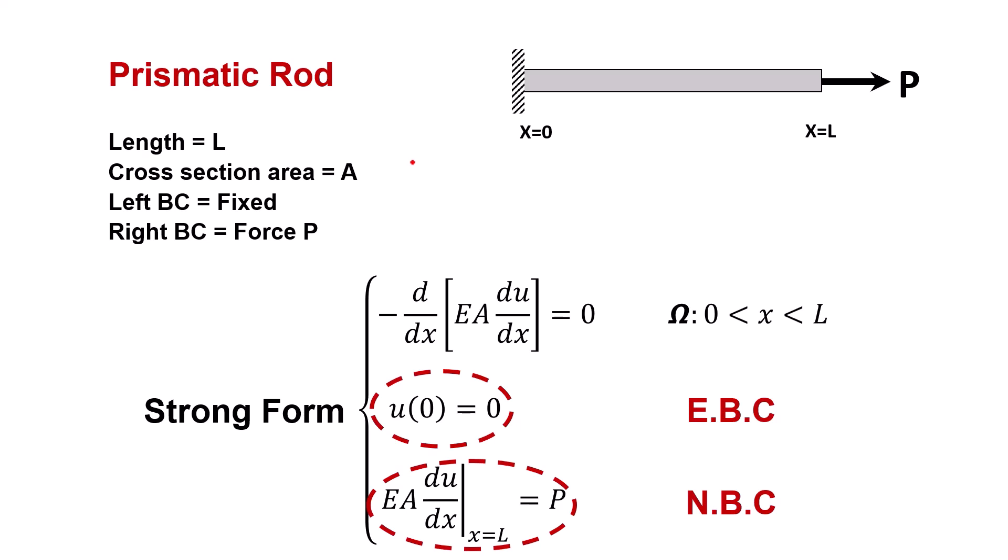To explain the steps for finding the weak form, let's use a simple example. A prismatic rod, like the one shown in this figure. The rod has length L, a constant cross-sectional area of A, and it's fixed at the left end. At the right end, a force P is applied.